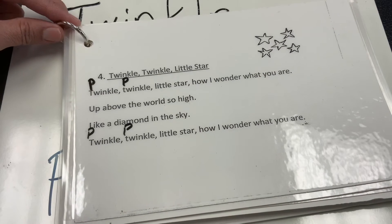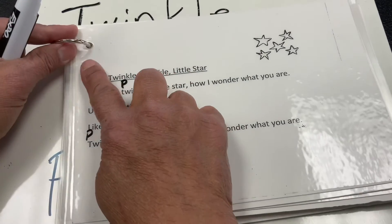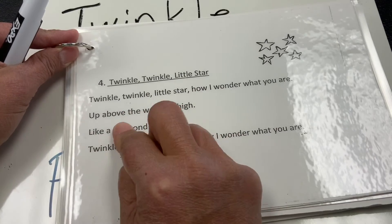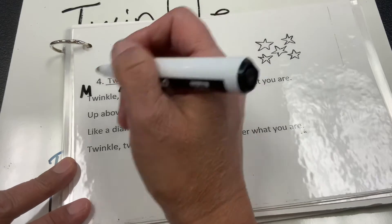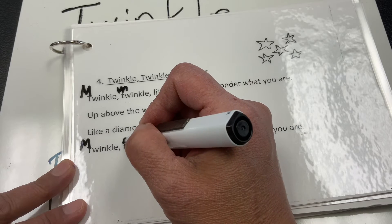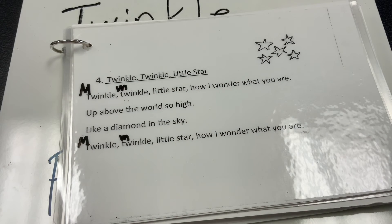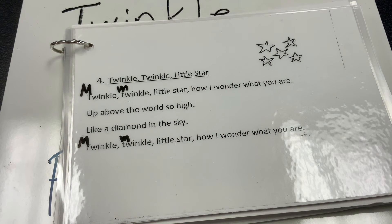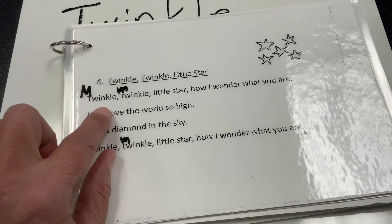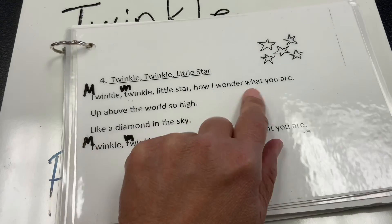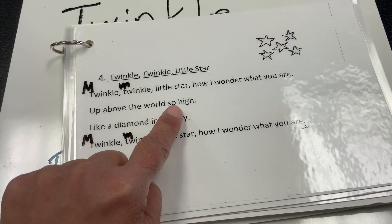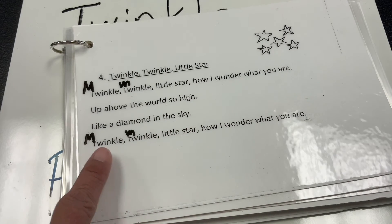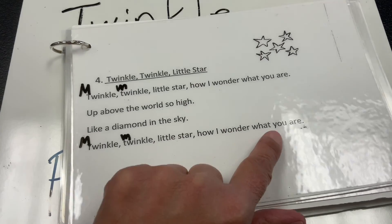Now if we change it to another letter — let's change it to, how about M? We just learned about letter M. Big M, little M — the big M for the beginning of a sentence, and little M for the middle. M makes the sound muh, like monkey, mom, and mad. And now for M, instead of saying twinkle, it's going to say minko. Minko is a nonsense word, but it rhymes with twinkle. Let's sing it: Minko, minko, little star, how I wonder what you are. Up above the world so high, like a diamond in the sky. Minko, minko, little star, how I wonder what you are.